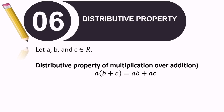Next, we have distributive property — or distributive property of multiplication over addition. The process is: A times the quantity B plus C. You multiply A into each term inside one by one: A times B gives AB, plus — using the same operation — A times C gives AC. So that is the distributive property.